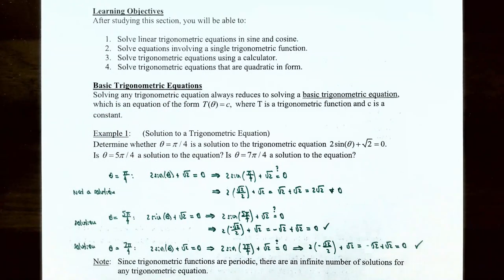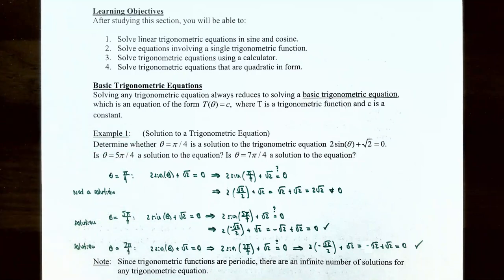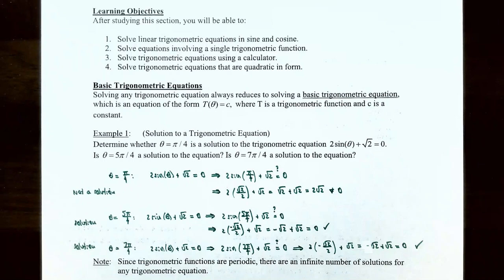Example 1: determine whether a given value of theta is a solution to the trigonometric equation. We need to check whether θ = π/4, θ = 5π/4, and θ = 7π/4 are solutions to 2 sin(θ) + √2 = 0. To check, substitute the value into the equation and see if it gives a true statement.